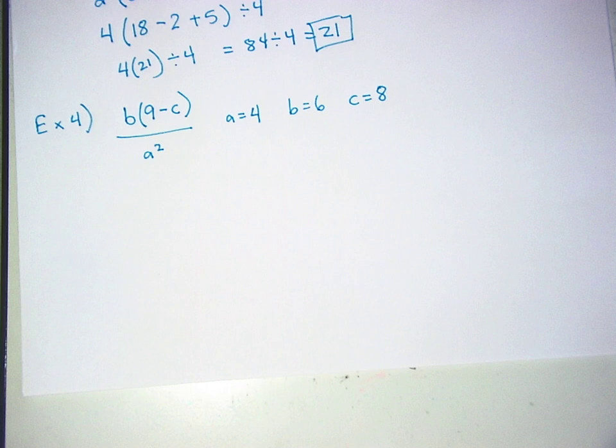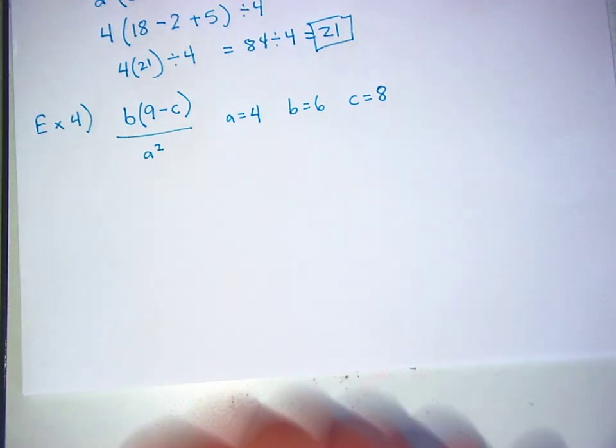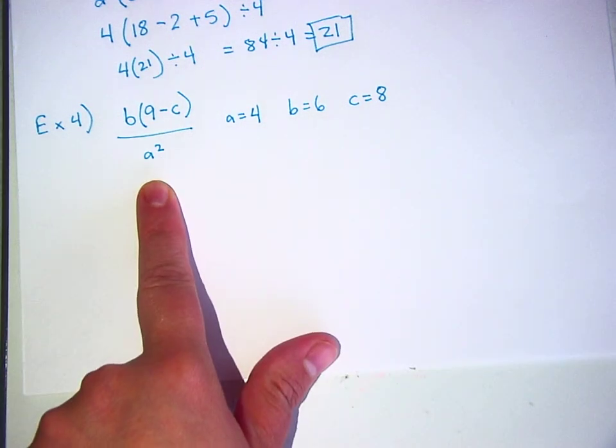All right. The correct answer for this is 3 eighths. 3 on top, 8 on the bottom. You might have 6 sixteenths, but then you've got to reduce it to 3 eighths. But remember, 4 squared is 16, not 8, because it's 4 times 4.